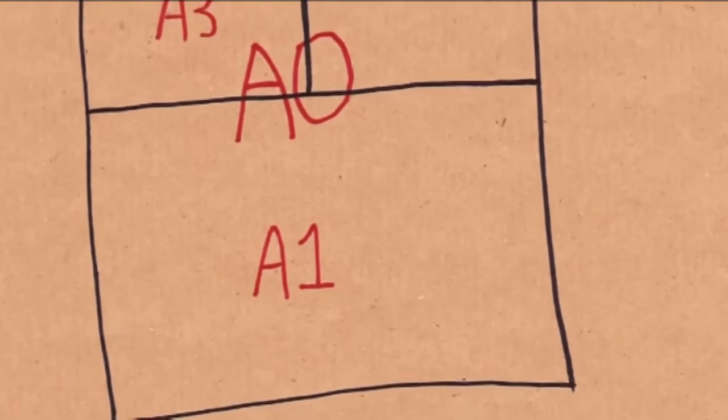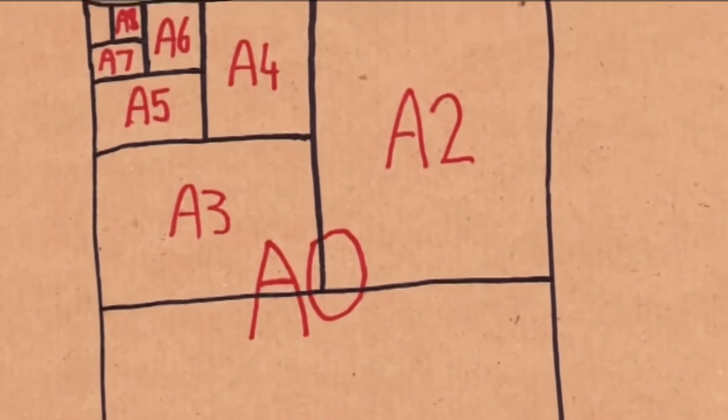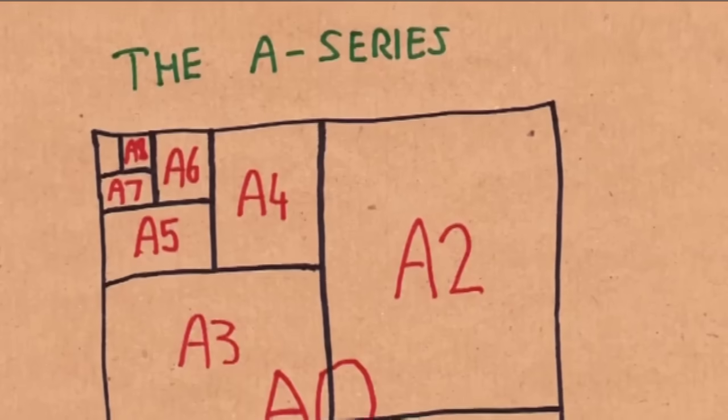And A0 is defined to be a piece of paper which has ratio square root of 2, and it has an area of 1 metre squared. In fact, root 2 is the only ratio where this works.